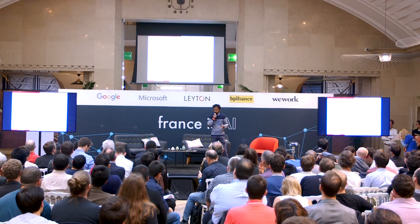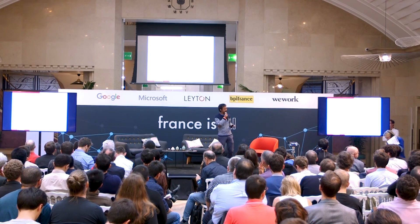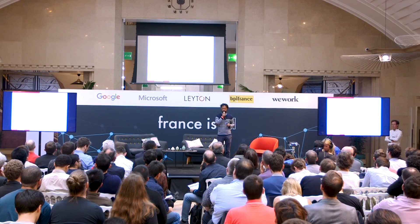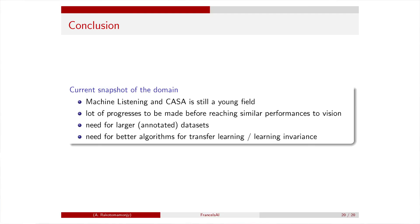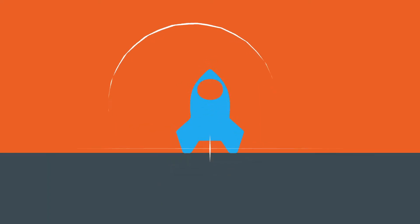To conclude: this is still a very hard domain with a lot of progress to be made to reach performance similar to vision. We need larger and well-annotated datasets, and still better algorithms for transfer learning and learning invariances. If you want to join — there are datasets, TensorFlow and PyTorch — you are welcome. Thanks a lot for your attention.